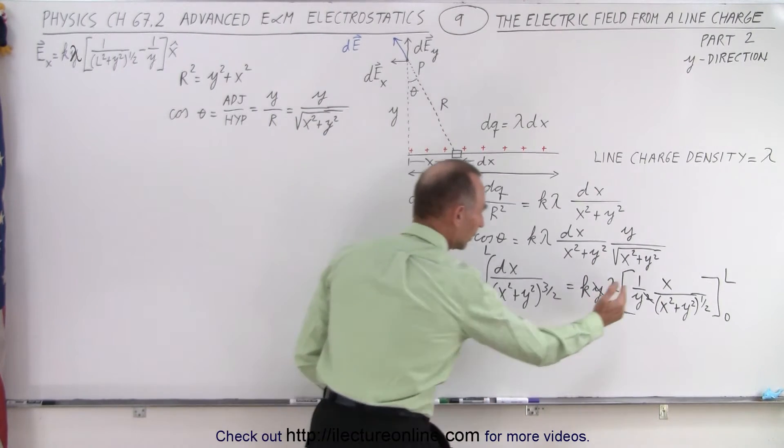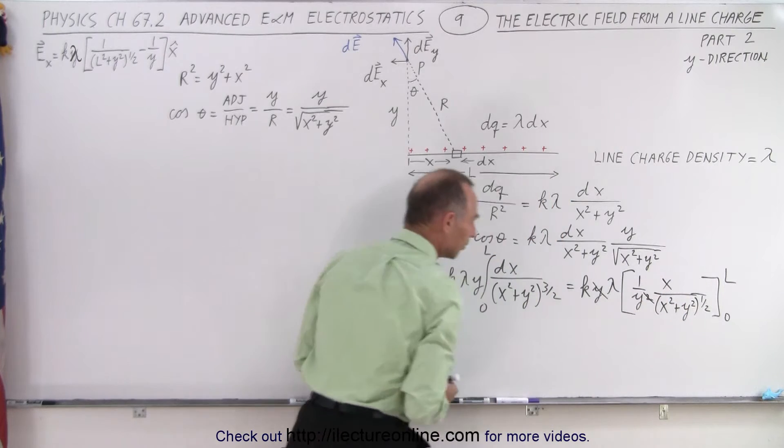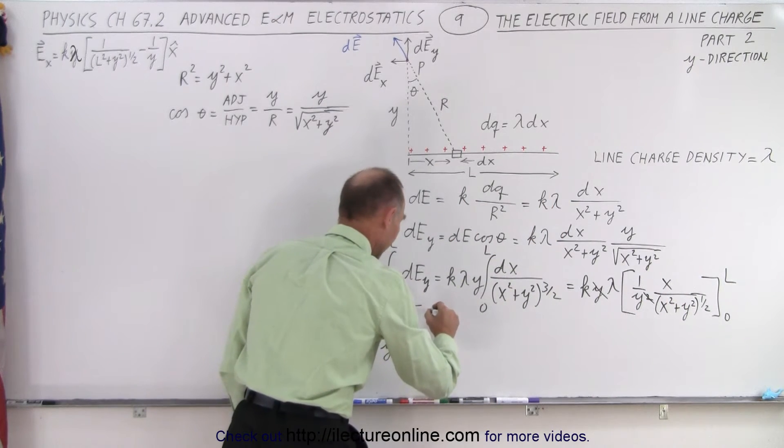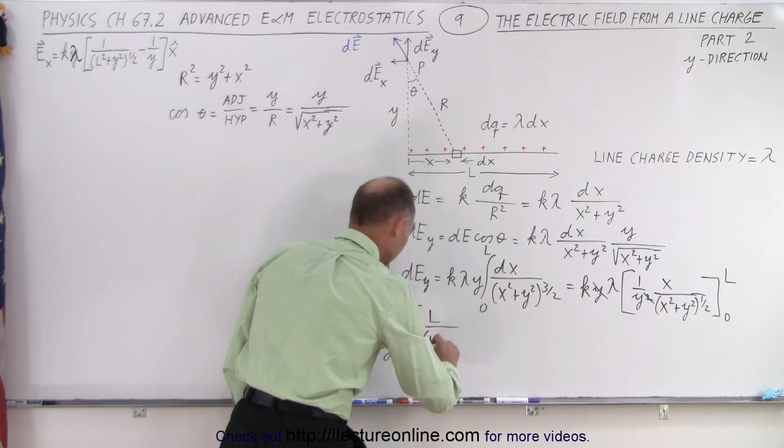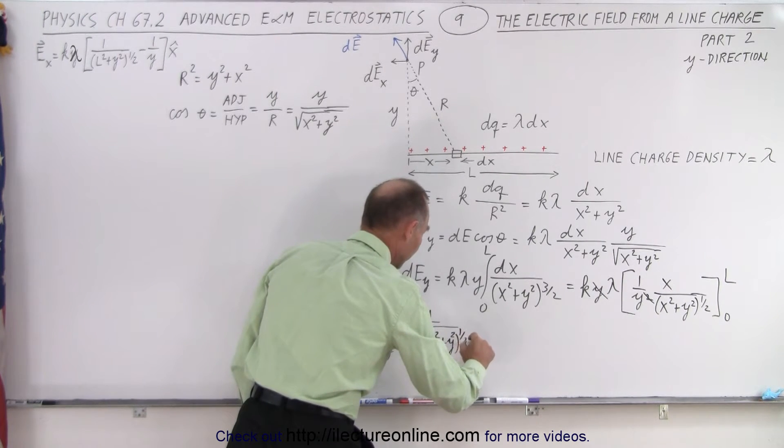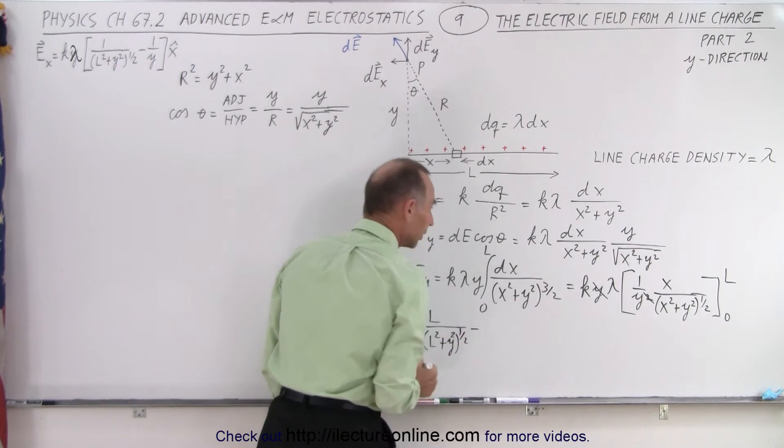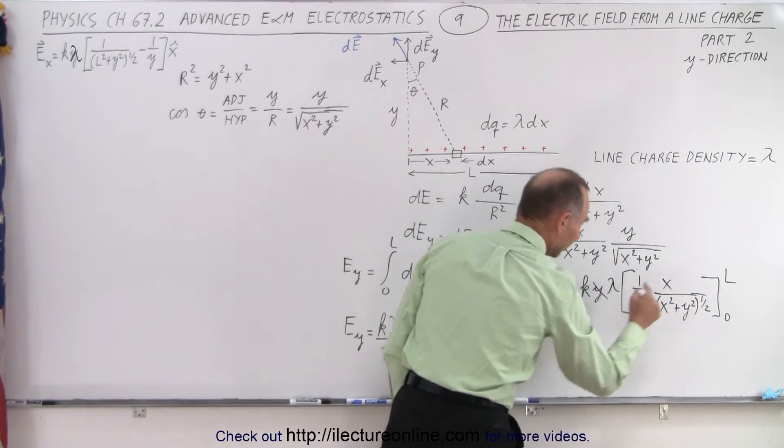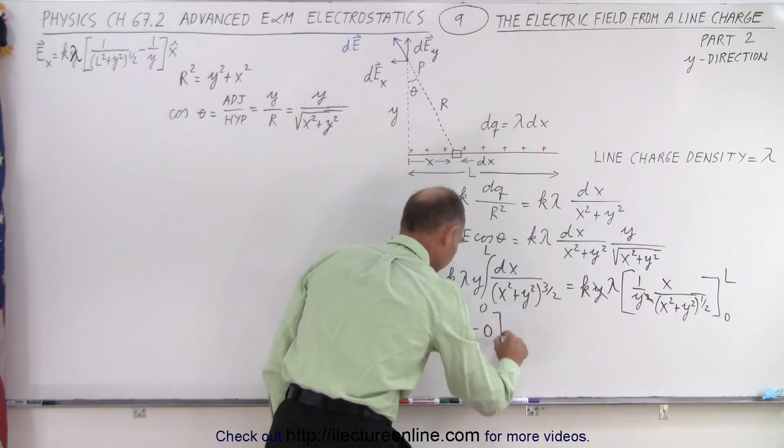So now this will be gone, now we have to take the limits of that portion. So we have L divided by the quantity L squared plus y squared to the 1 half power, minus when we plug in the lower limit, I get 0, because there's a 0 in the numerator, like this.